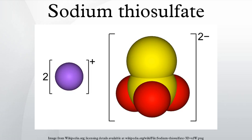6 NaOH + 4 S → 2 Na2S + Na2S2O3 + 3 H2O. Upon cooling, sodium thiosulfate crystallizes out of solution.